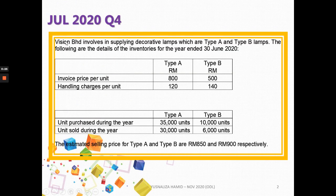Question 4 — let's see the information given. Vision Berhad is involved in supplying decorative lamps, which are Type A and Type B lamps. The following are the details of the inventories for the year ended 30th June 2020.